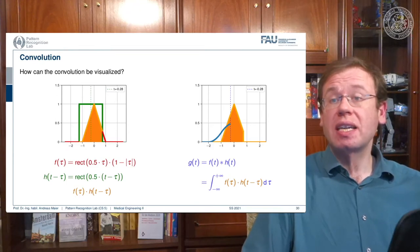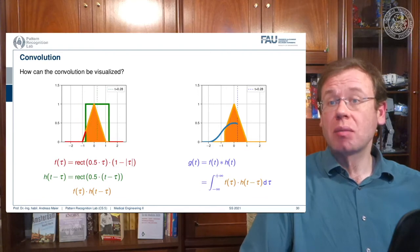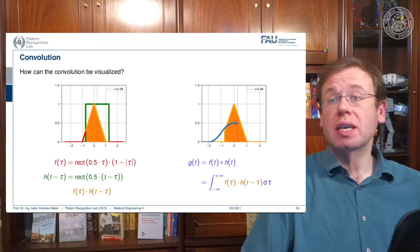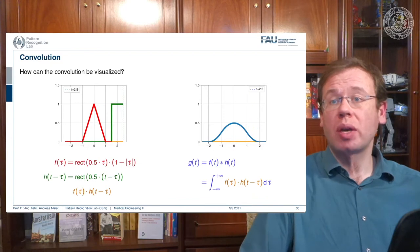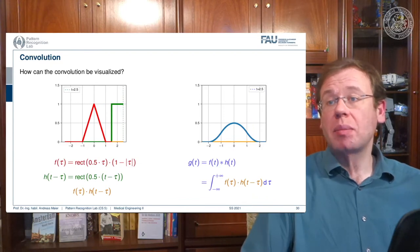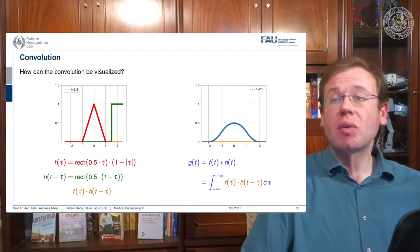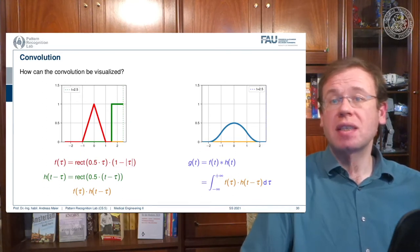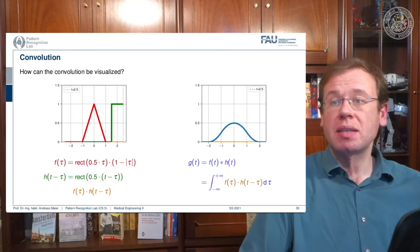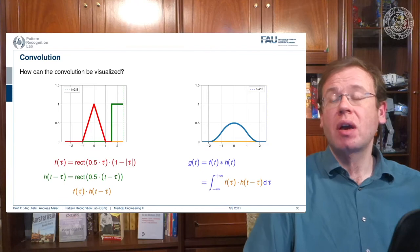Continuing to shift further, the overlap increases and then starts to decrease, so the function value goes down again. Eventually we reach a point where they don't overlap anymore. This is how we compute the convolution: we shift two functions against each other, then multiply them and add them up, resulting in the curve on the right-hand side.